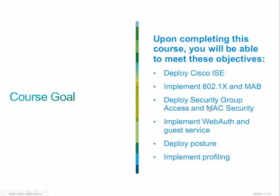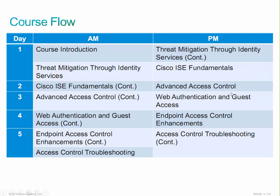The objective of this course is really just deploying the Cisco Identity Services Engine, implementing 802.1X, MAC authentication bypass, deploying security group access and MAC security, implementing things like WebAuth and guest services, how do we do posture assessments and profiling, and implementing the profiling component as well. Now, this is normally a five-day class. We are going to be working to try and compress this into about a four-day class, but you can see the different topics that we're going to be talking about today.